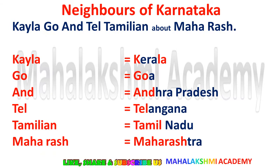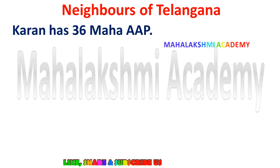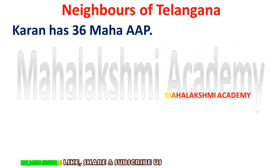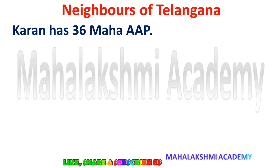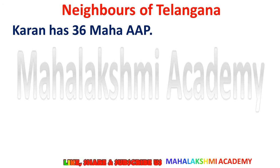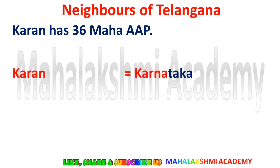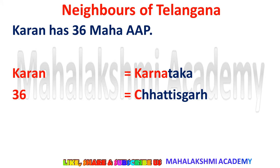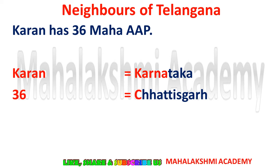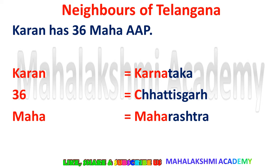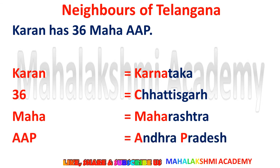Now let's look at the neighbors of Telangana. The trick is: 'Karan has 36 maha apps.' So Karan developed 36 big apps. Karan is for Karnataka. 36 is for Chhattisgarh — because 36 in Hindi is known as 'Chhattis', so 36 stands for Chhattisgarh. Maha is for Maharashtra, and App (AP) is for Andhra Pradesh. These are the regions sharing boundaries with Telangana.